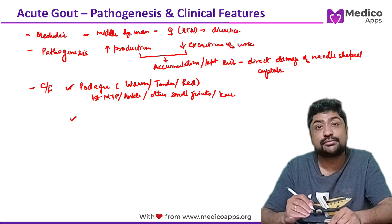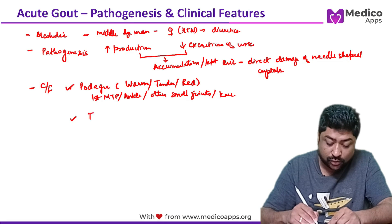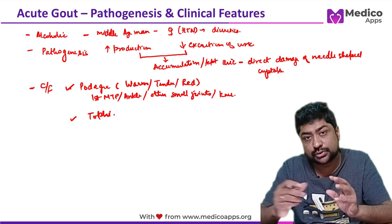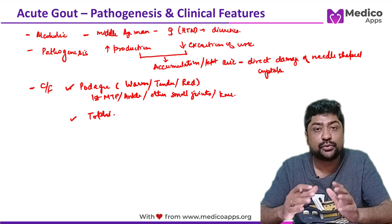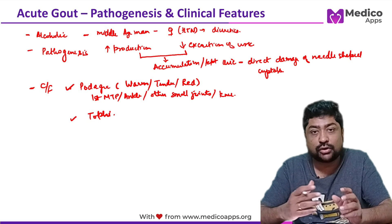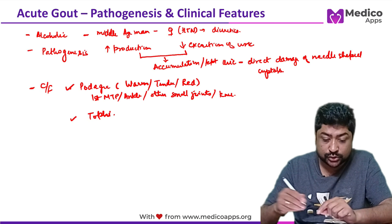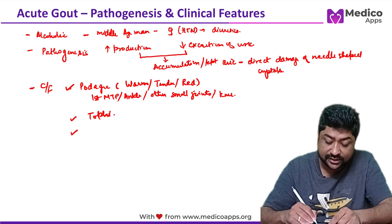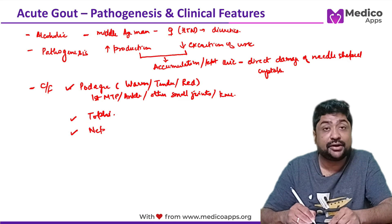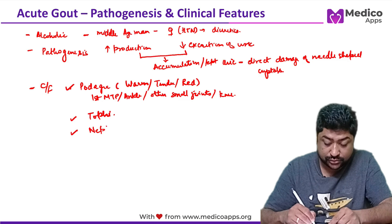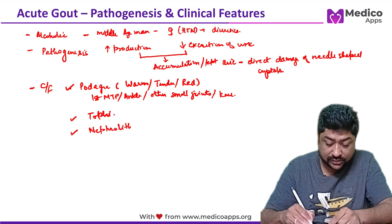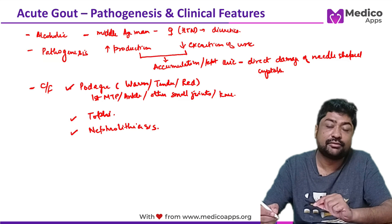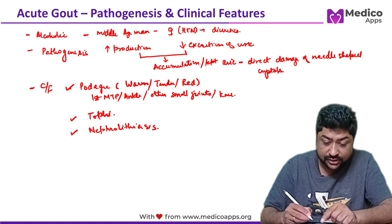There will also be soft tissue deposits called TOFI — clinical images will be shown towards the end of the topic. Another very important clinical history you can get is history of recurrent stones, i.e., nephrolithiasis. These are the key clinical features of gout.